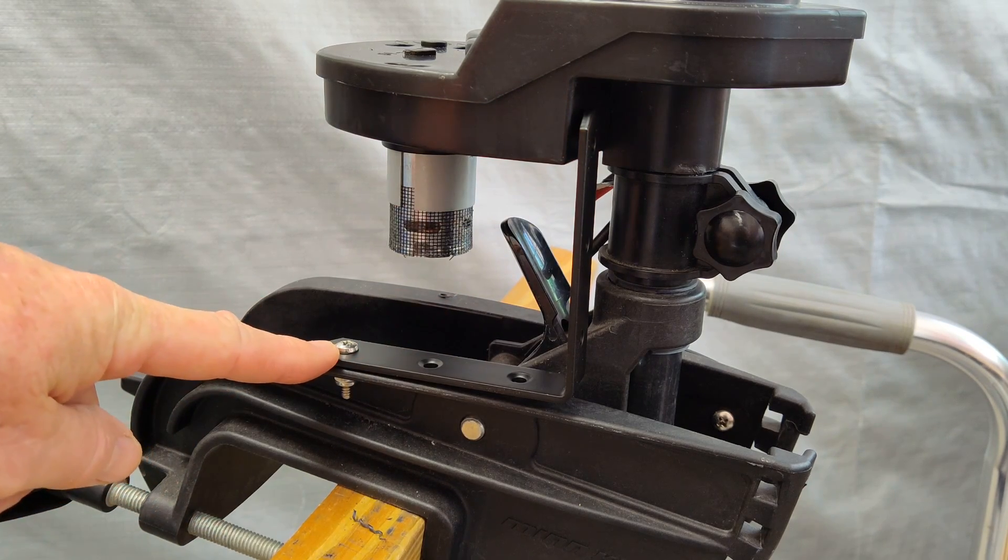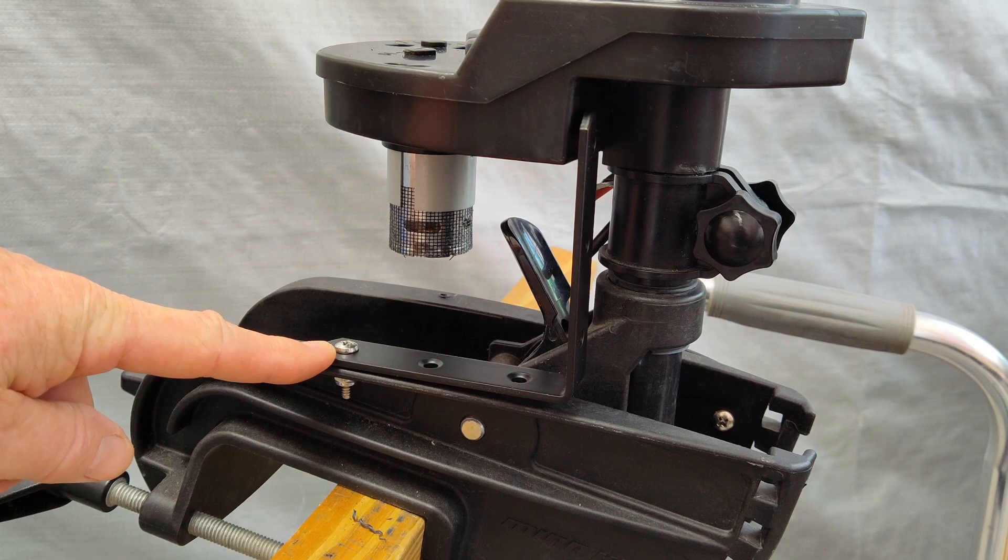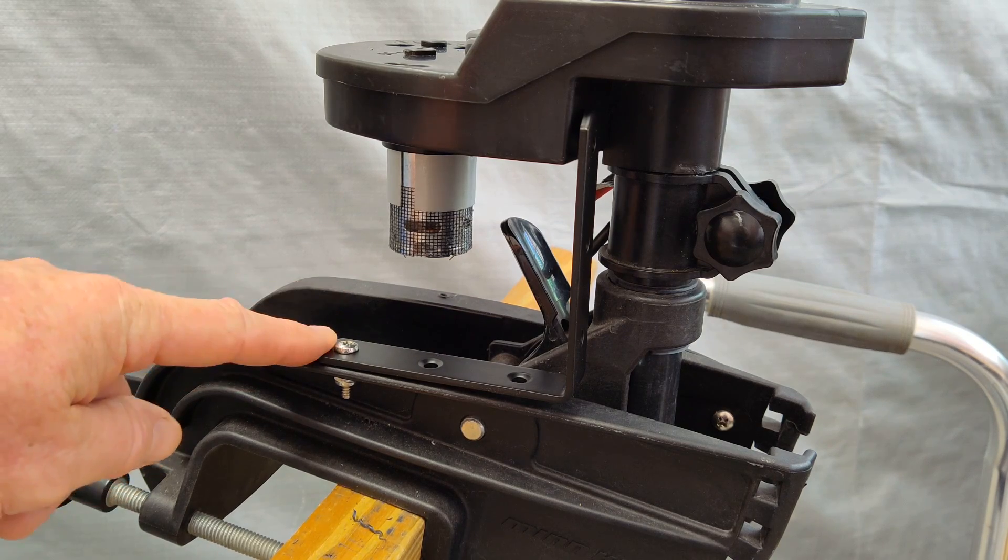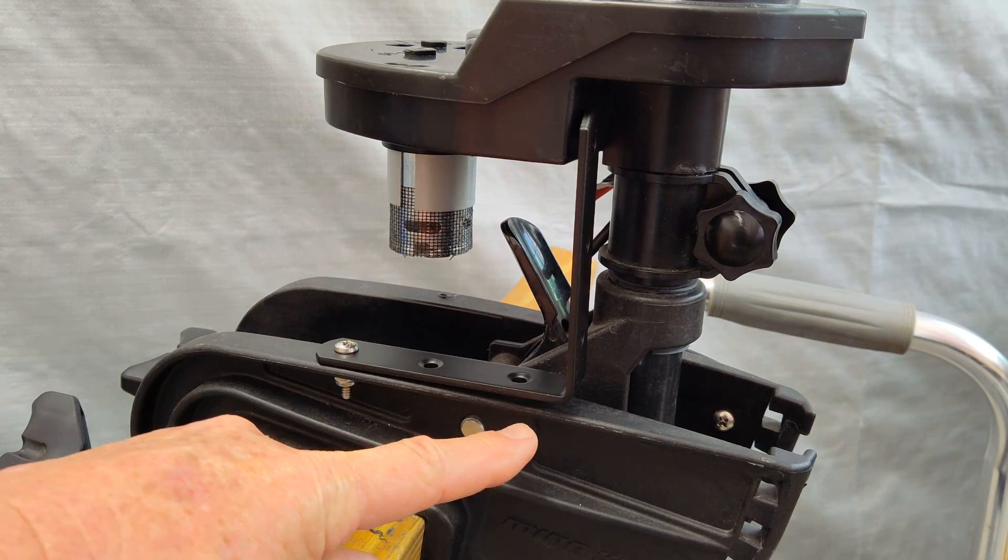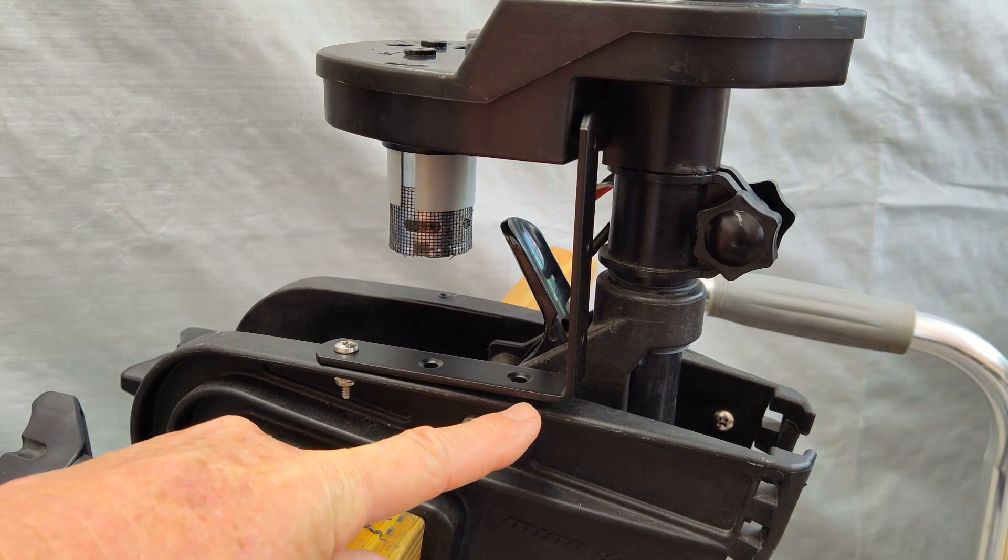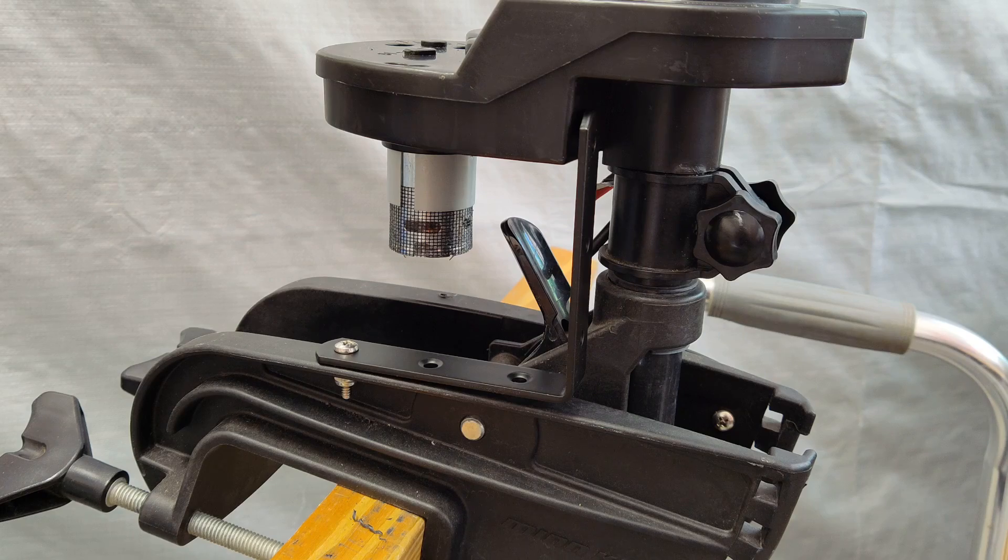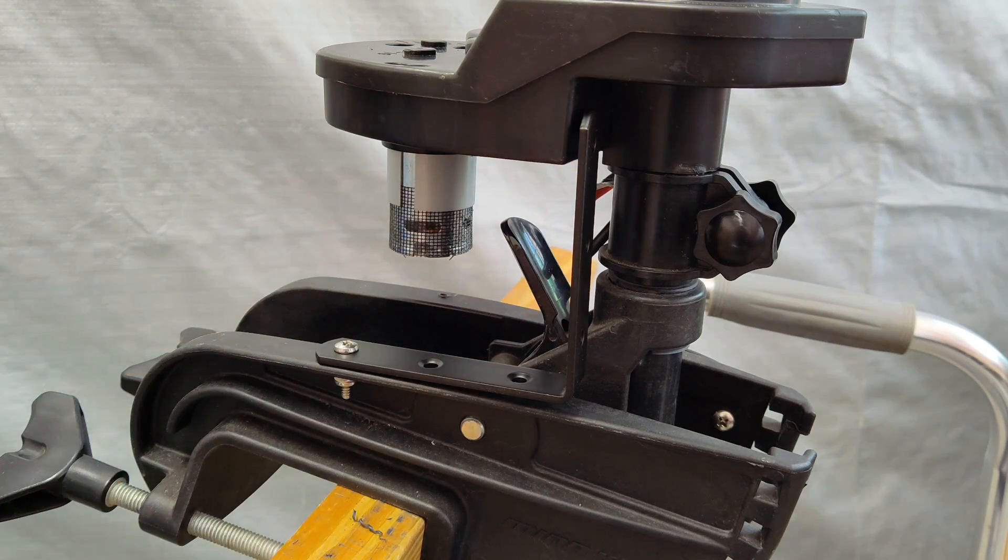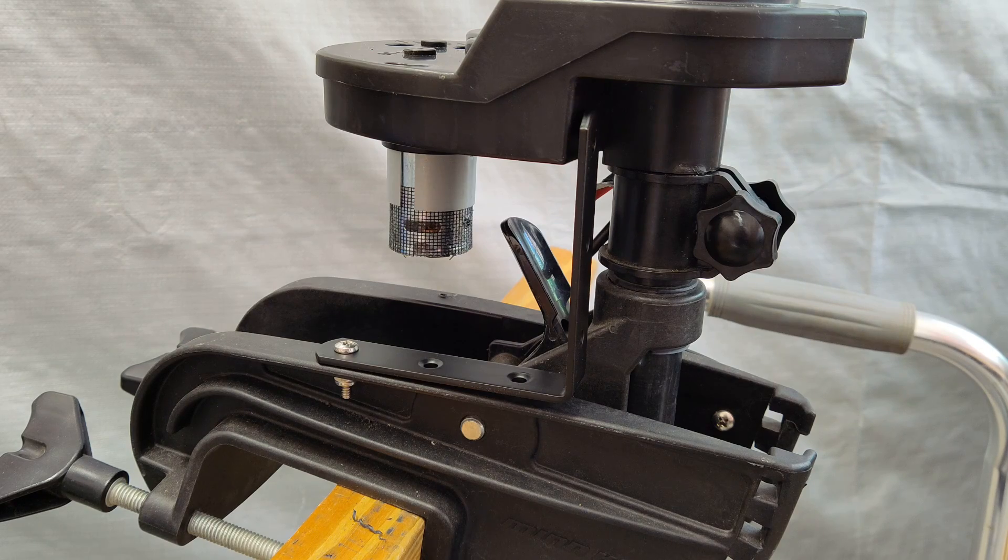Then I marked and drilled this hole here for a 10-24 bolt. By doing the front one first it raised up the bracket so it's level, and there's a gap in there you need to fill with a bushing or washers or something else. That will give you the desired setup. Just repeat for the other side.